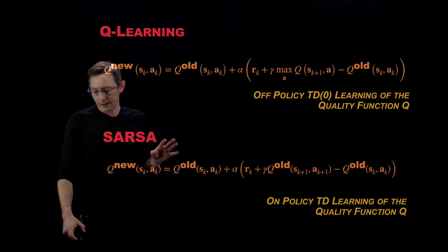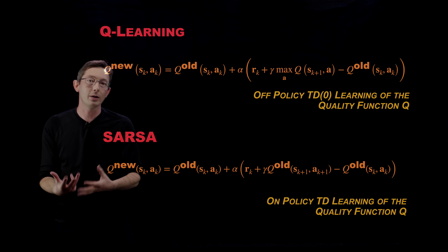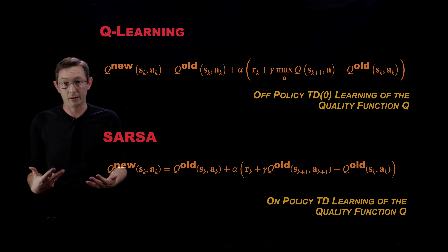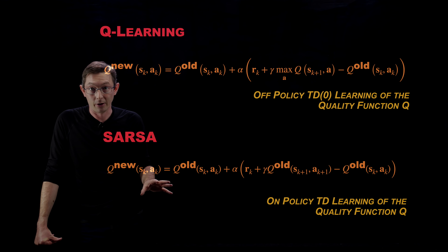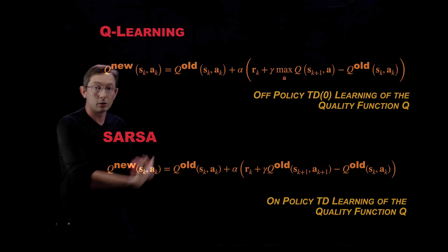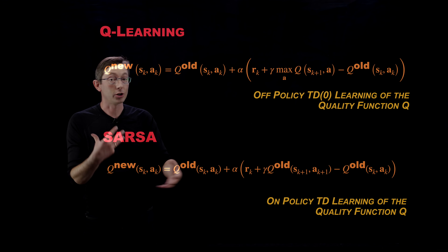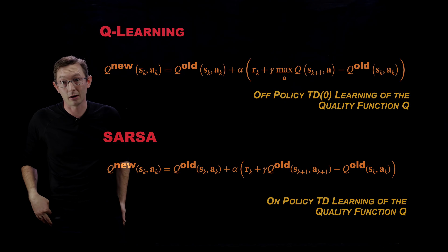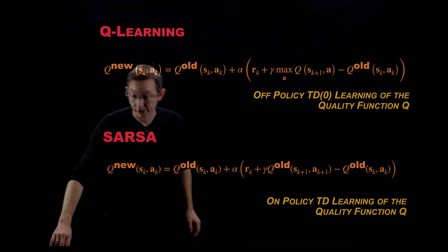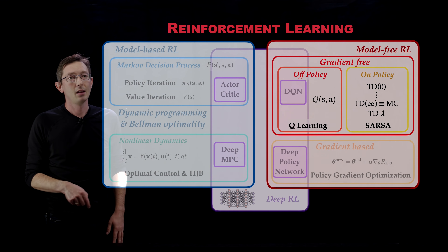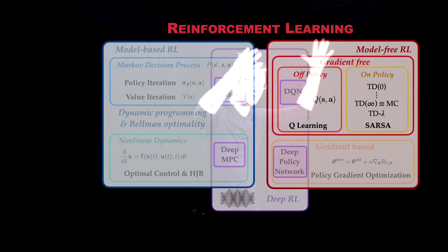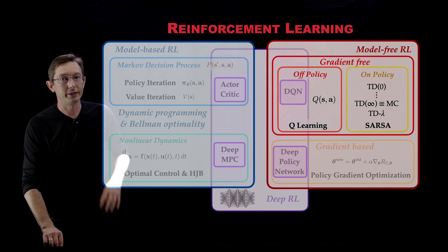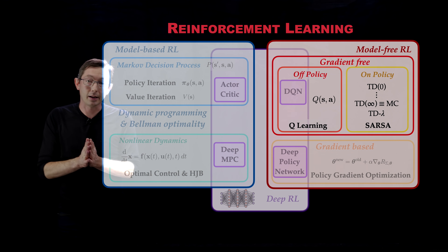To summarize: when you don't have a model for your MDP, these methods — inspired by dynamic programming and Bellman's equation — can be thought of as approximate dynamic programming based on real-world experience trajectories. You take actions through trial and error and accumulate information about the quality of state-action pairs. There are off-policy and on-policy variants with different strengths and weaknesses. Q-learning is used heavily in deep reinforcement learning, which I'll cover in a future lecture.